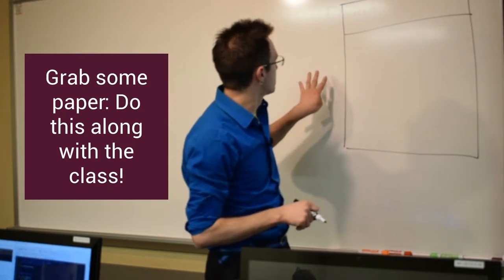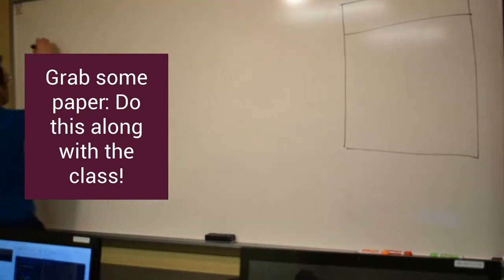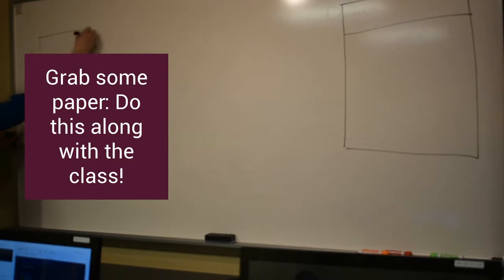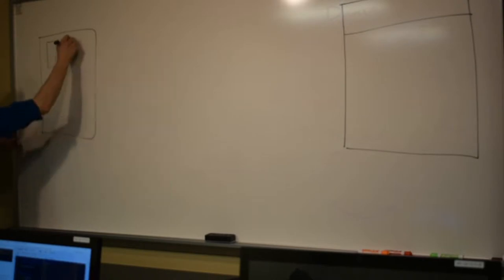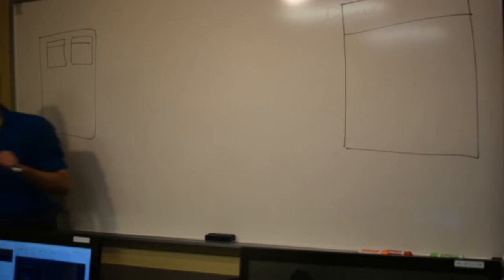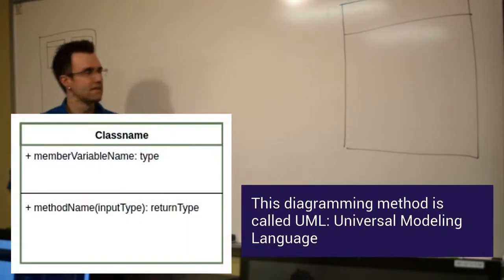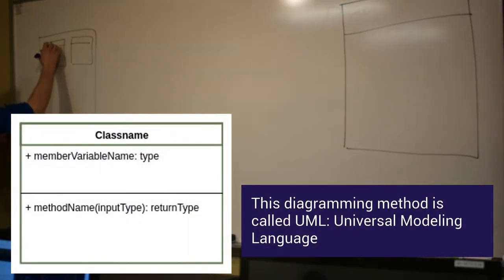So we're going to, if this is your paper, your 8.5 by 11 paper, let's make our little UML diagrams up here. So we're going to have two classes. What are the two blueprint classes we just made? Creature. Creature. Capital or lowercase? Capital. Capital. And? Sized donut. Sized donut.